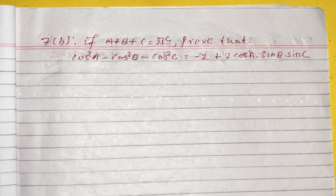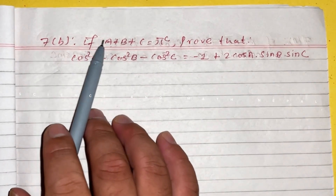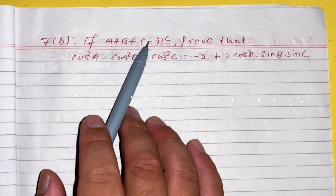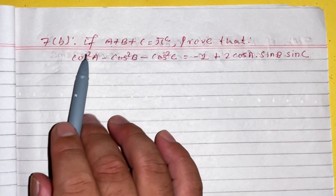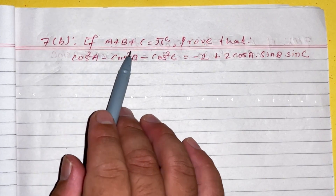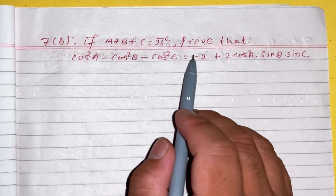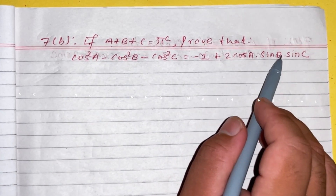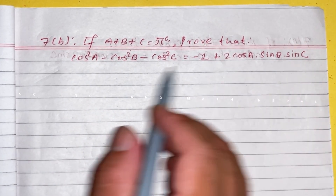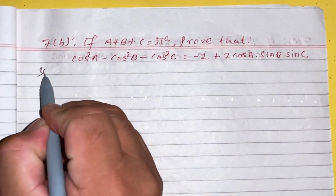Next question: if a plus b plus c equals pi radian, prove that cos square a minus cos square b minus cos square c equals minus 1 plus 2 cos a sin b sin c. Solution.